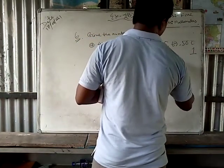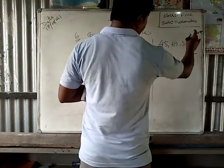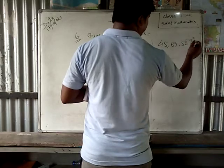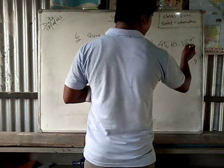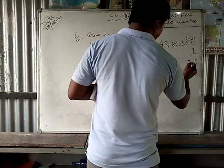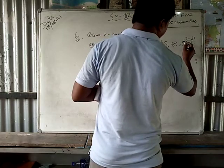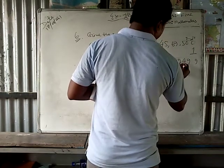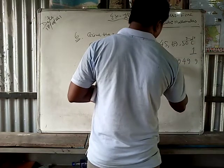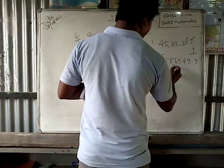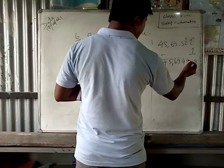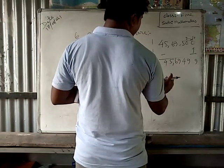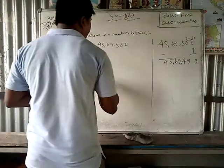From 0 subtract 1 — not possible. So from here take 1 — here become 10, 10 minus 1 is 9. From here take 1, here 0 is there — so here 4, here 9, 6, 5, 4. So 45 — 1, 10, 100, 100,000 — 45,000, 69,499.